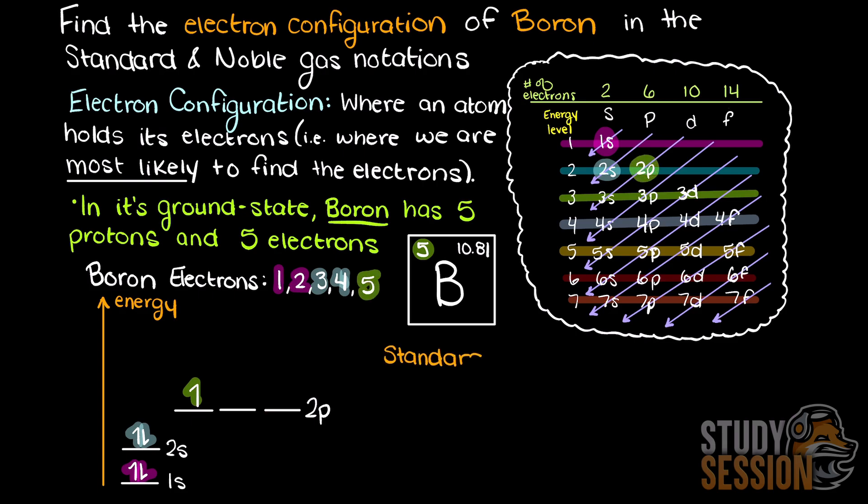We can now write the ground state electron configuration of boron like so, 1s2, 2s2, 2p1.